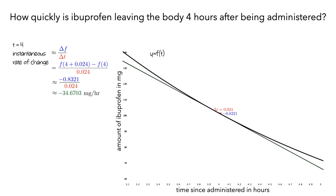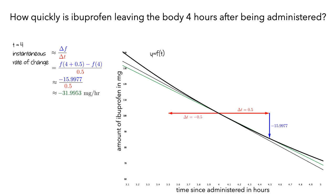To get a sense of the precision, let's go back to our original half-second interval and redraw that secant line. In addition to the interval from 4 to 4.5 hours, let's also look at the interval from 3.5 to 4 hours. I'll add a red arrow to illustrate this amount of change in time. Since we're going back in time, this is negative 0.5 hours. I'll now add the corresponding amount of change in ibuprofen, which is positive 18.9857 milligrams.